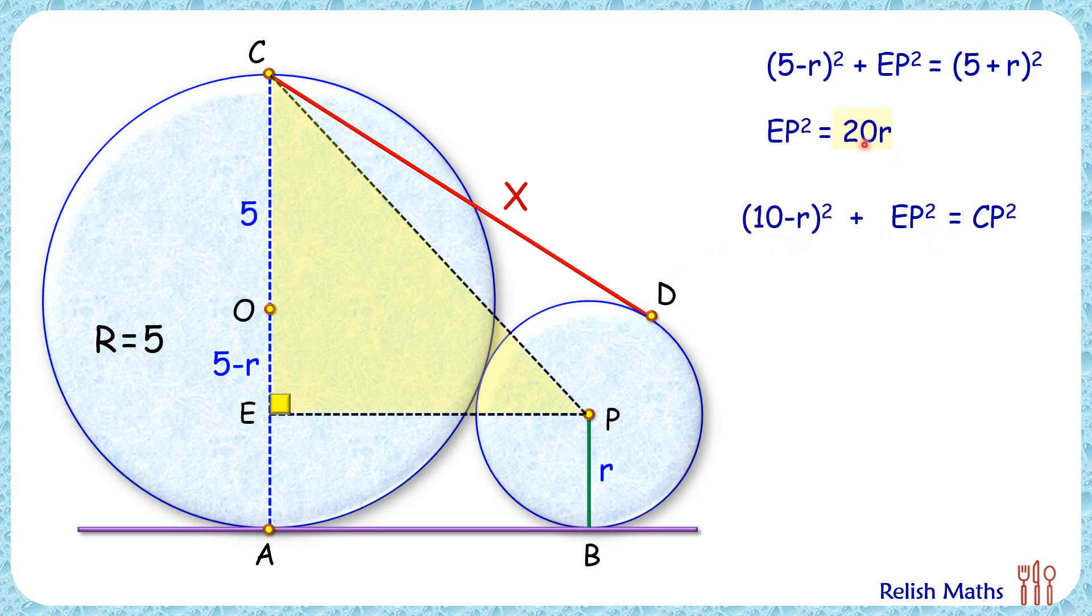EP² is 20r, so let's replace EP² with 20r. Now opening up the bracket and simplifying it to get CP² as 100 plus r².